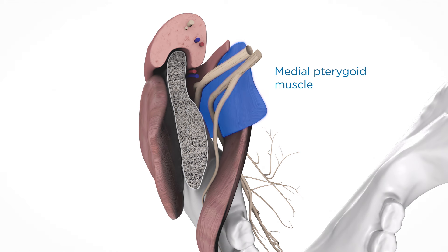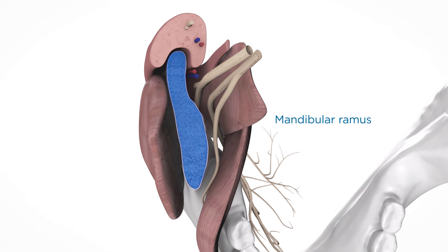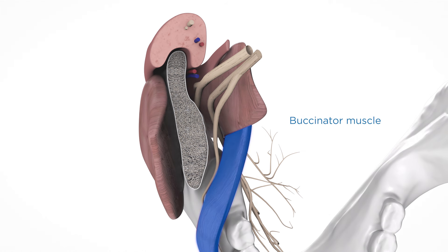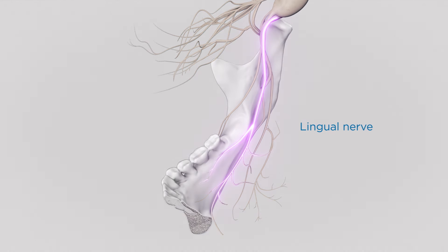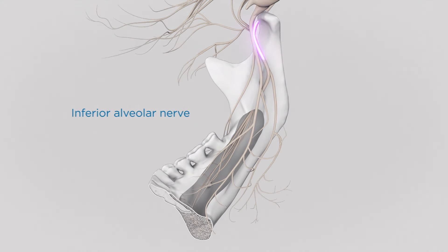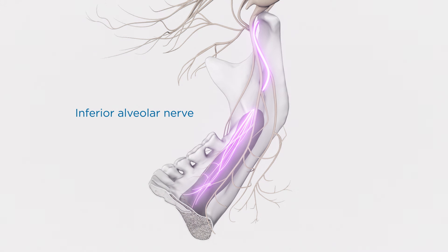The pterygomandibular space, as seen in this transverse section across the ramus of the mandible, is bounded medially by the medial pterygoid muscle, laterally by the mandibular ramus, posteriorly by the parotid gland, and anteriorly by the oral mucosa, submucosal connective tissue, and the buccinator muscle. Superiorly, it is defined by the lateral pterygoid muscle. Within the pterygomandibular space are the inferior alveolar and lingual nerves, the inferior alveolar artery and vein, and the sphenomandibular ligament. The lingual nerve follows a downward and lateral course through the space until it exits into the floor of the mouth. The inferior alveolar nerve passes through the space lateral and downward behind the lingual nerve, assuming a slight S-shaped configuration until it reaches the mandibular foramen.